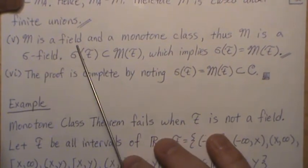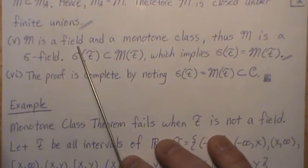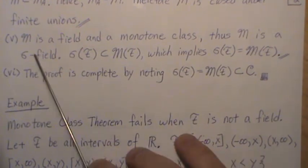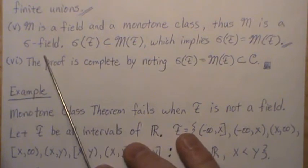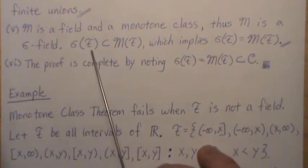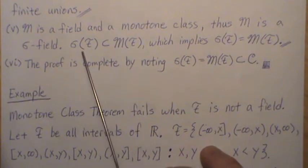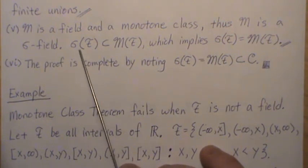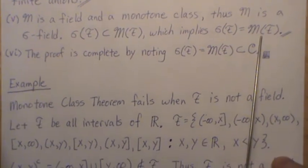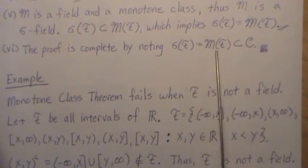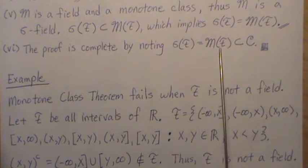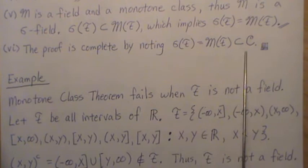Steps four and five: M is a field — it contains Ω, is closed under complementation, and is closed under finite unions — and it is also a monotone class. Thus M is a sigma field. Since M is a sigma field containing F, σ(F) ⊆ M. But σ(F) is a monotone class so M ⊆ σ(F). They must be equal, and since M = σ(F) ⊆ C, the proof is complete.